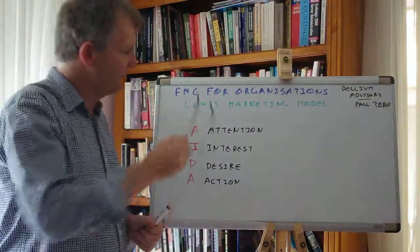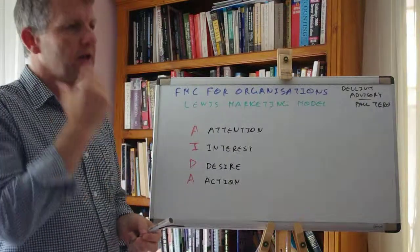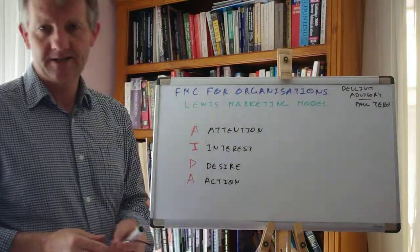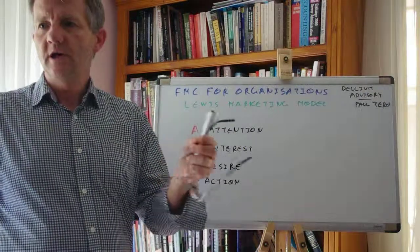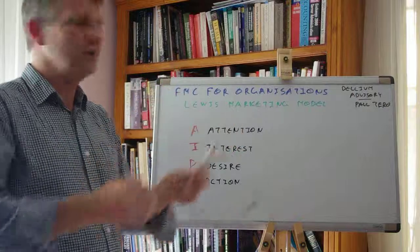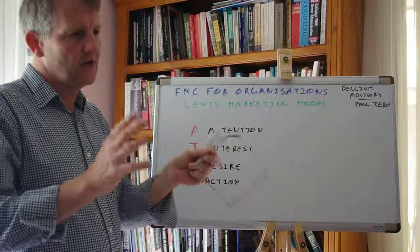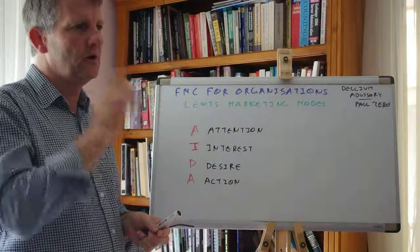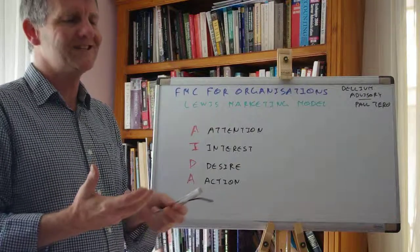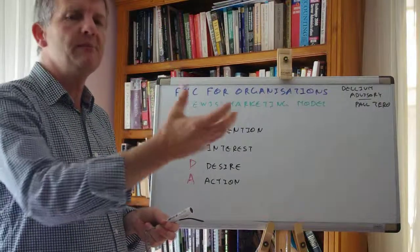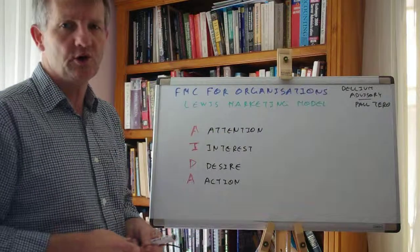So let's just go over it. A for Attention — how are you gaining people's attention? How are you gaining your market's attention? What is causing people to shift their gaze upon you? I for Interest — once people have shifted their gaze upon you, by what manner, through what means are you causing them to then be interested in that product or service, interested in what you have to offer?